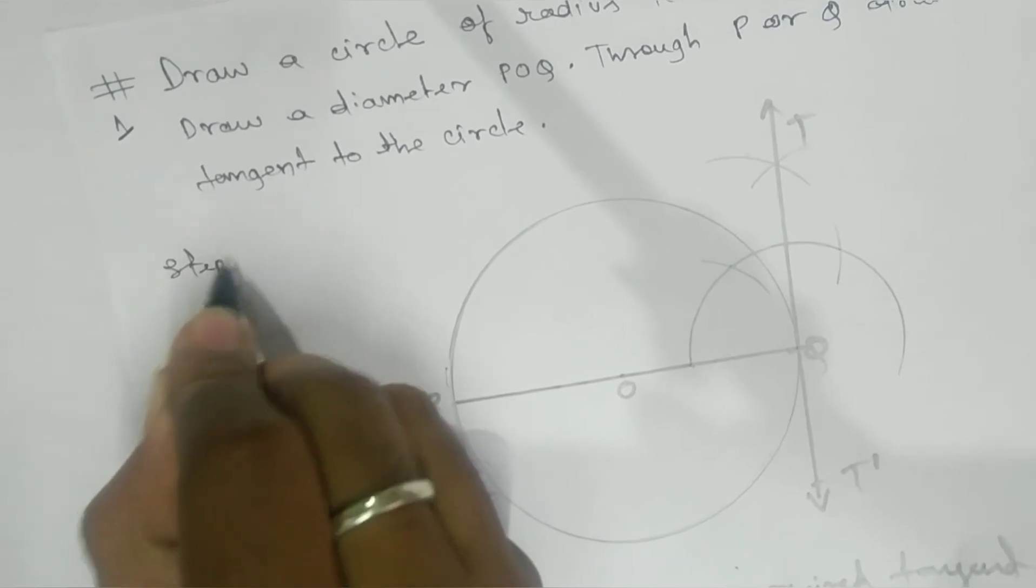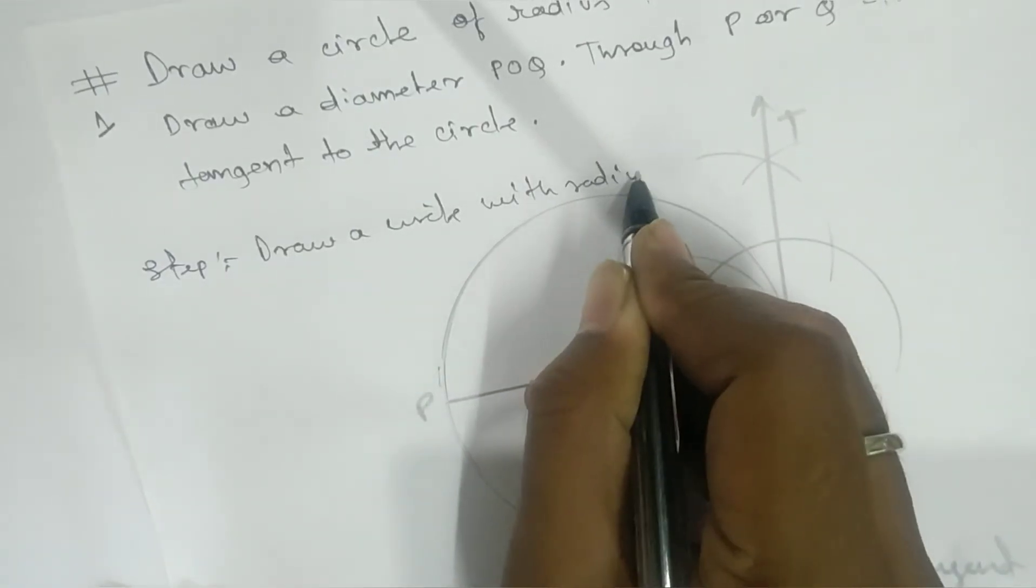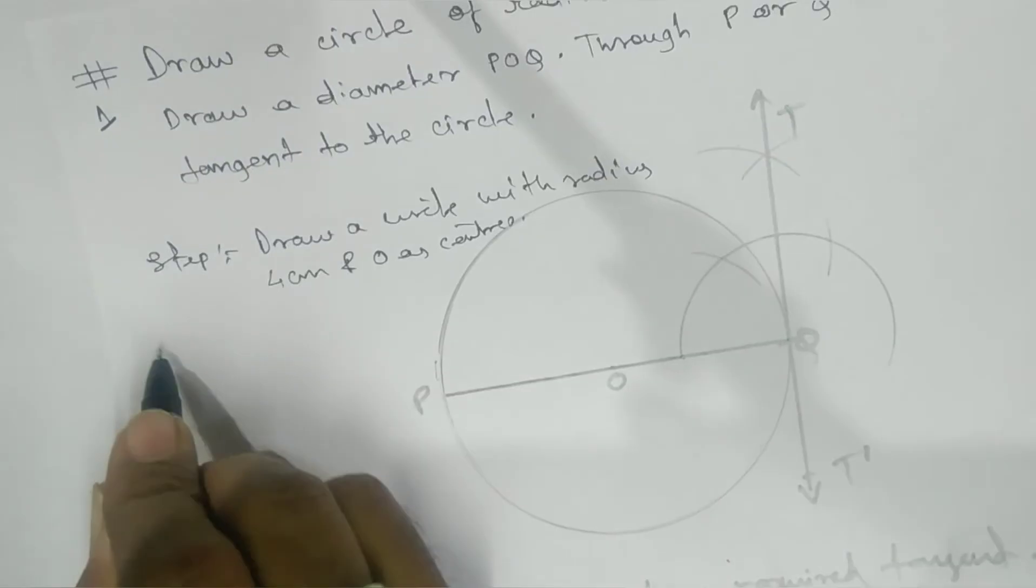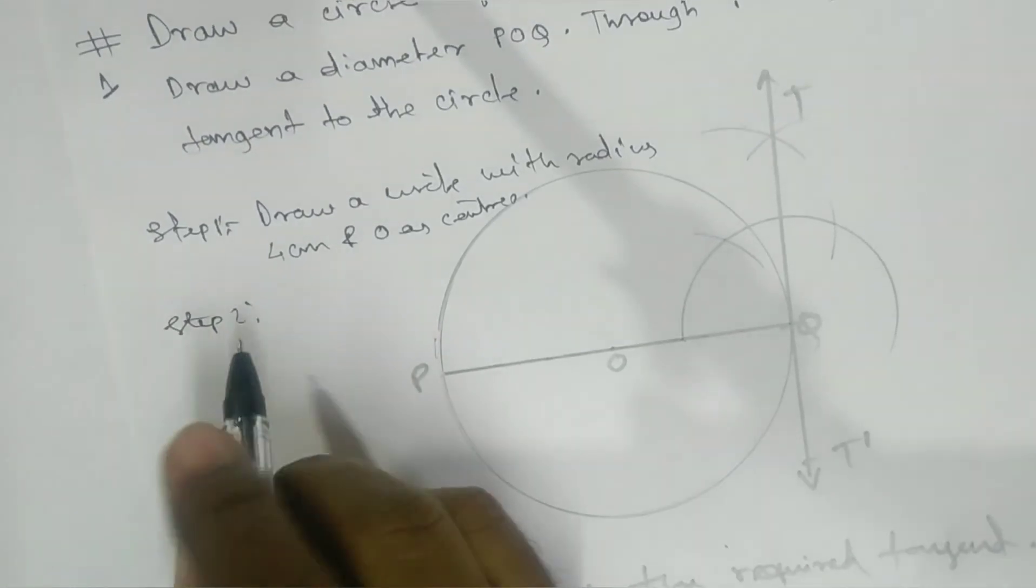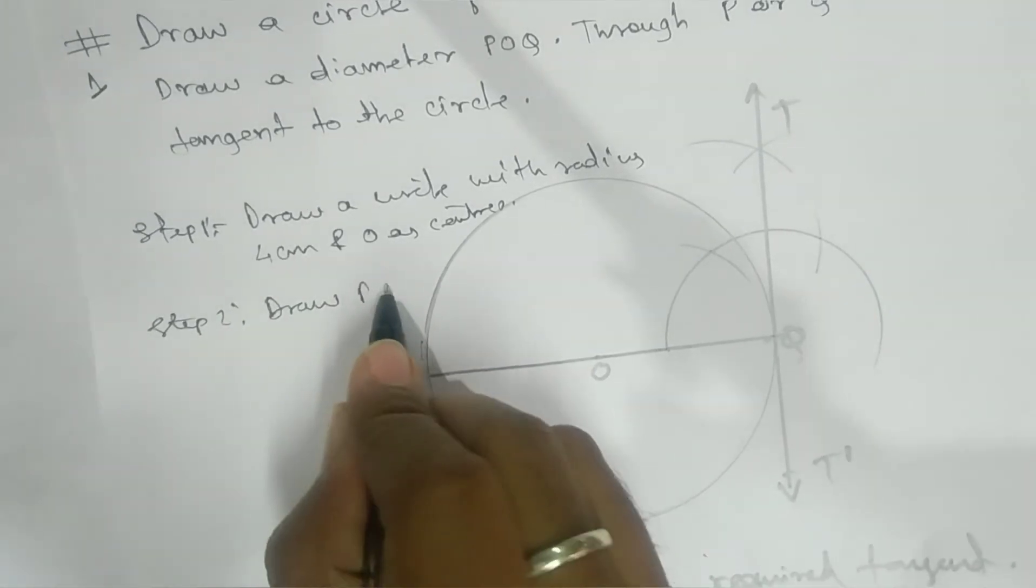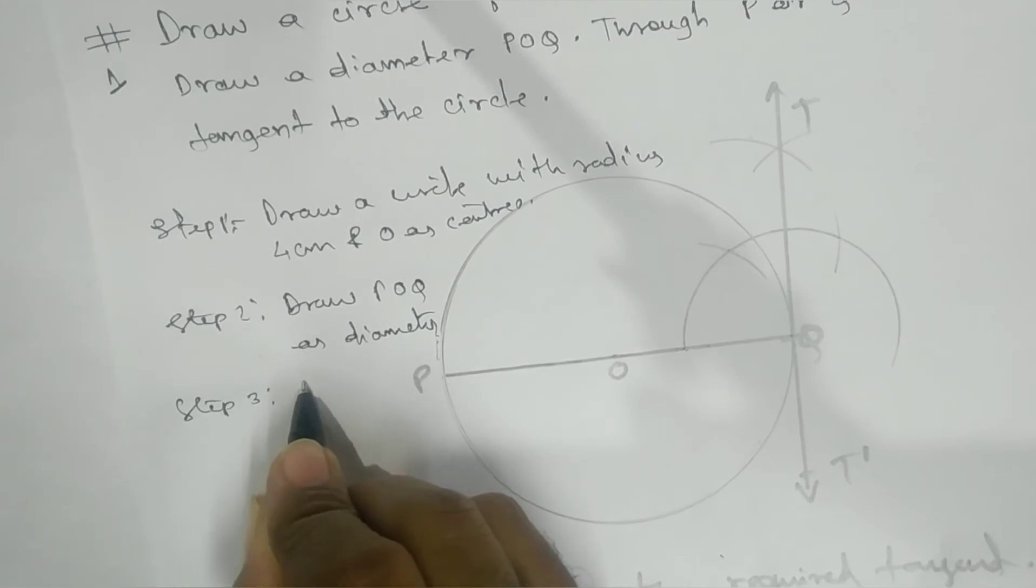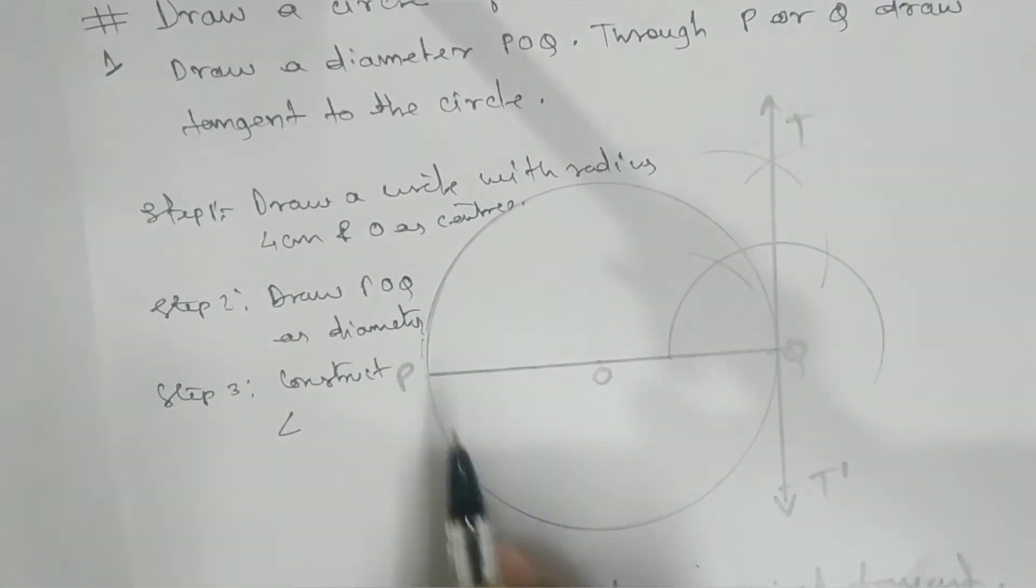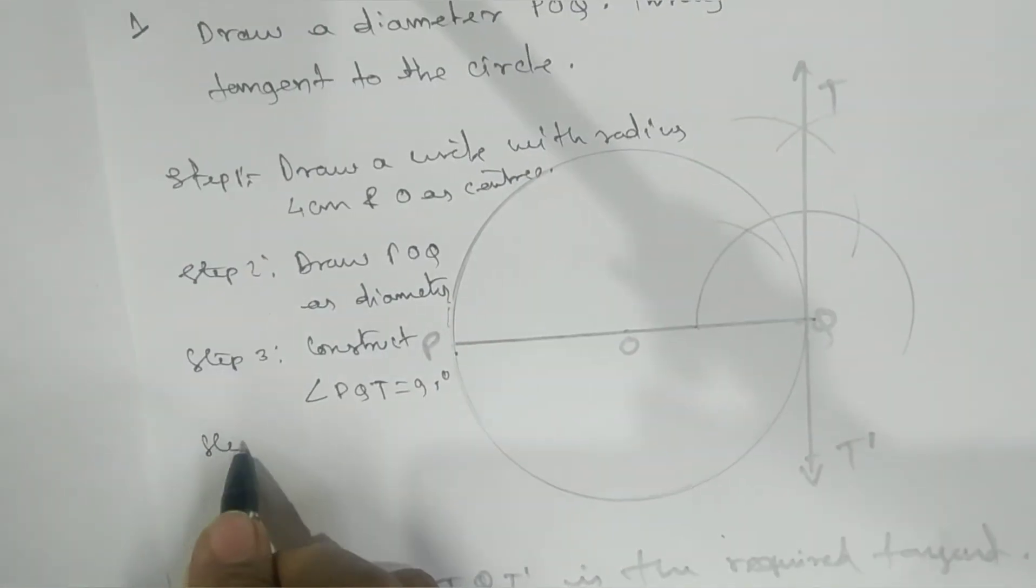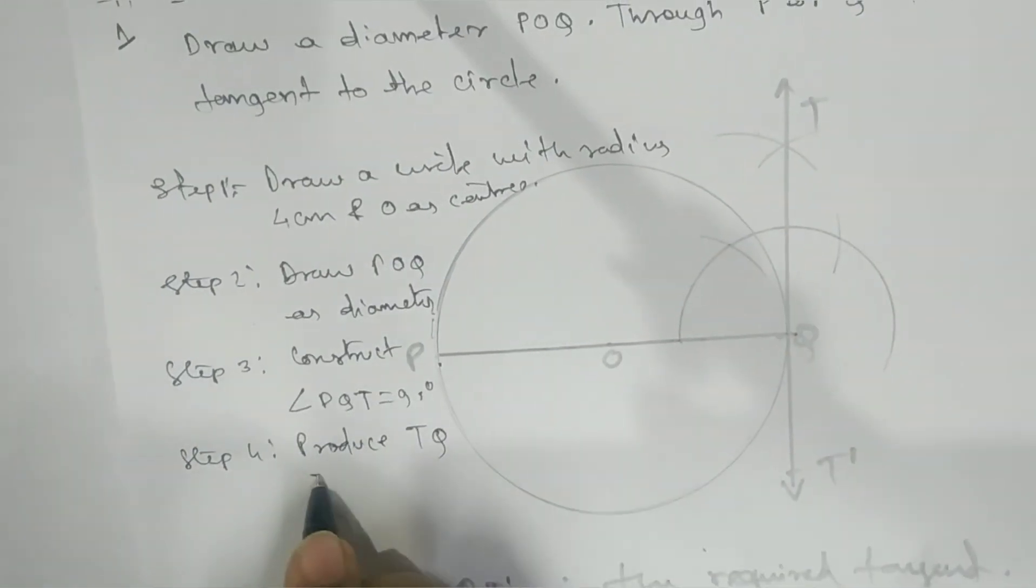First step: Draw a circle with radius 4 centimeters and O as center. Second step: Draw POQ as diameter. Third step: Construct angle PQT equal to 90 degrees.